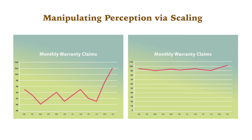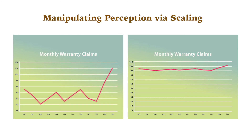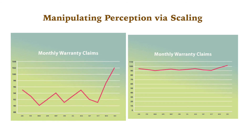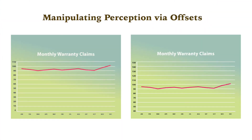As with every question of communication ethics, it depends on what the audience needs to know in order to make an informed decision. If executives are concerned primarily with the overall level of performance, the graph on the right emphasizes how far performance is from the ideal of zero. If their primary concern is smoothing out month-to-month variability, the graph on the left emphasizes that more dramatically. Whatever the situation, make these decisions mindfully and in response to audience needs — you might be tempted to use certain scaling because it looks more attractive, but that might not be the most ethical solution.